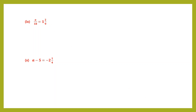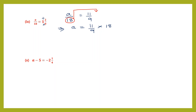Question 9: a/18 = 1 and 2/9. We convert the mixed number: 9 × 1 + 2 = 11, so it becomes 11/9. To solve for a, transpose 18 — division on the left — to the right as multiplication: a = (11/9) × 18. We can cancel 9 and 18: 9 twos are 18, giving a = 11 × 2 = 22.